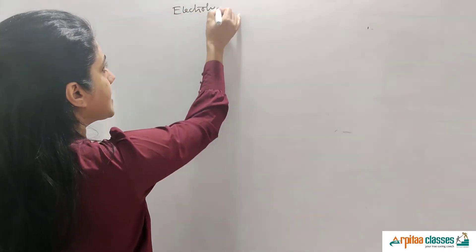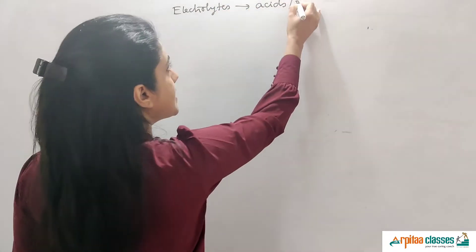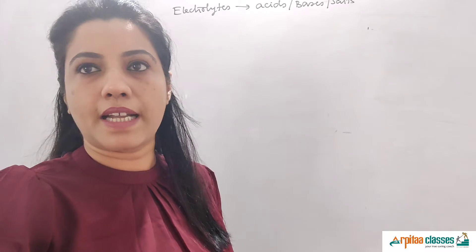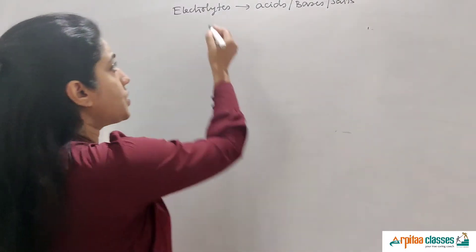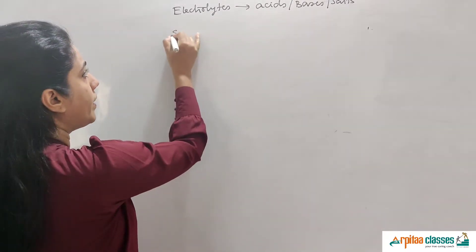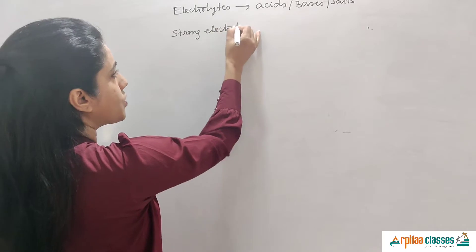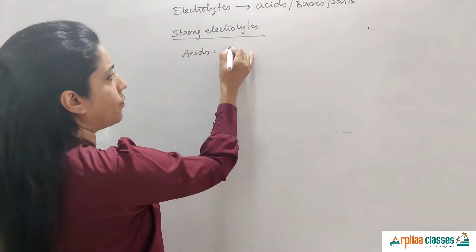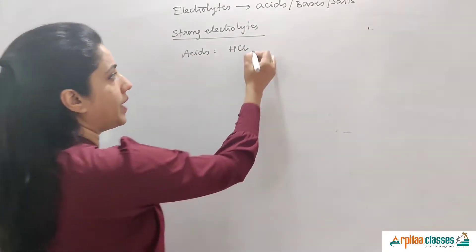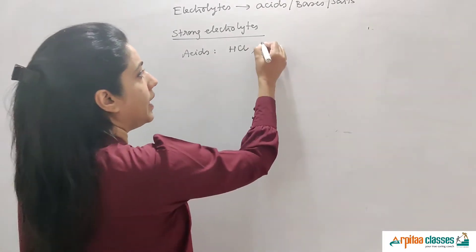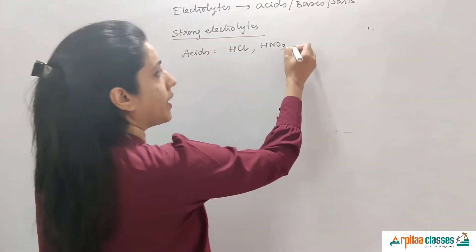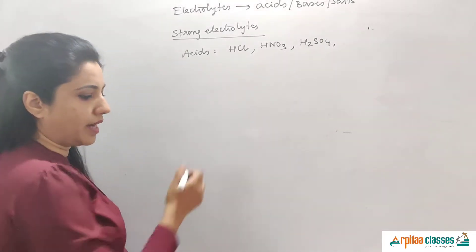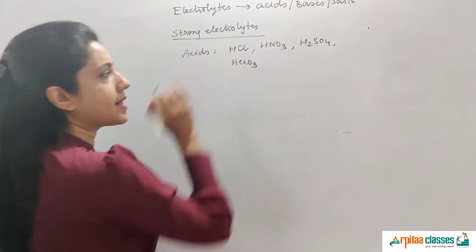These electrolytes can be acids, bases, or salts. Examples of strong electrolytes include all strong acids: HCl, HNO3, H2SO4, HClO3 — all strong acids are strong electrolytes. Similarly, all strong bases are strong electrolytes — for example NaOH, KOH, calcium hydroxide, magnesium hydroxide. Group 1 and Group 2 metal oxides and hydroxides are strong bases.